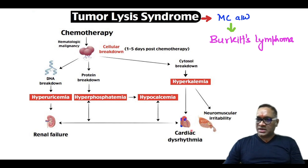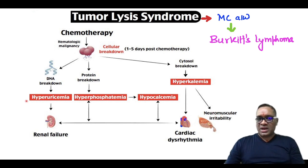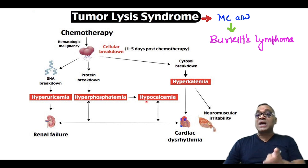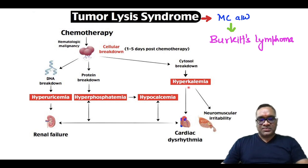Hyperkalemia will also lead to cardiac dysrhythmia and neuromuscular irritability. Always remember these four important findings of Tumor Lysis Syndrome: hyperuricemia, hyperphosphatemia, hypocalcemia, and hyperkalemia. Enjoy learning — best wishes.